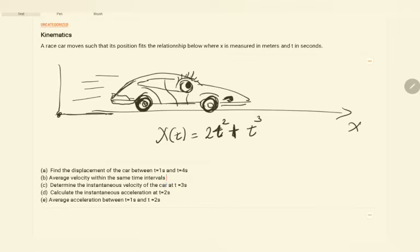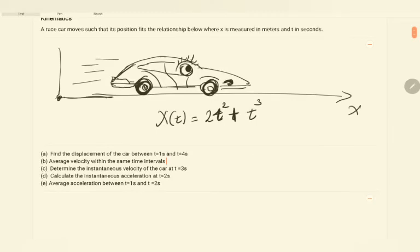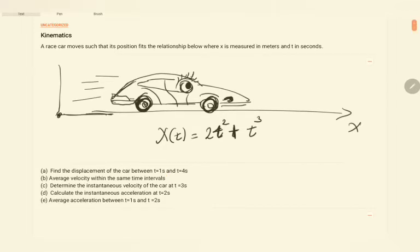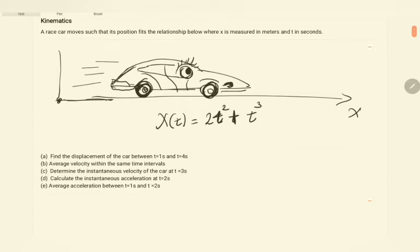Here I have a question which says the car moves such that its position fits the relationship below. The position at any later time t is given by x = 2t² + t³, where the car is moving in the positive x direction. We are asked to find the displacement between t = 1 second and t = 4 seconds.